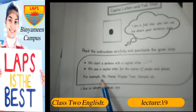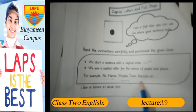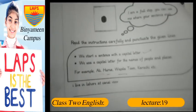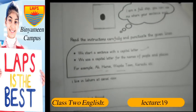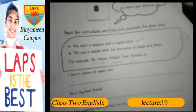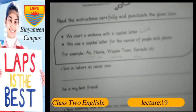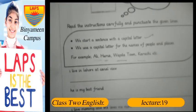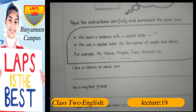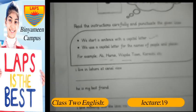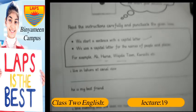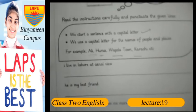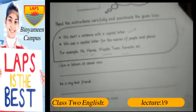We use a capital letter for the names of people and places. For example, Ali, Huma, Vapda Town and Karachi. These are names of people and places. For the name of a particular place, person or thing, we start with a capital letter. Like the word 'book' is written with a small b, but 'Holy Quran' is also a book yet it is written with capital initials — H capital and Q capital of Holy Quran.